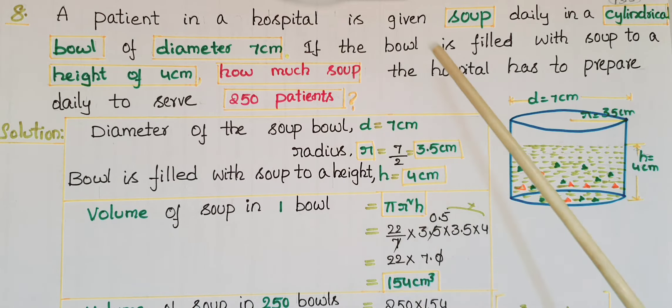So first to find volume of soup in one bowl, we know that this soup bowl is in the form of a cylinder, so cylinder volume is pi r squared h.